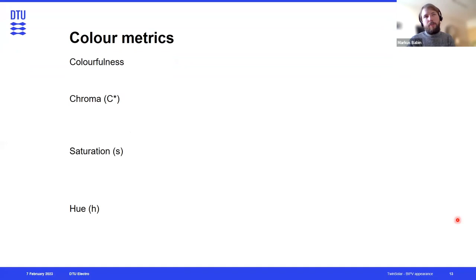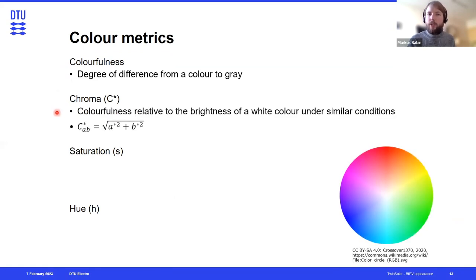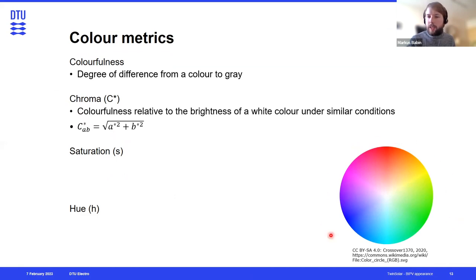Going from brightness and lightness to color descriptions: colorfulness is not very well defined — it's basically the degree of difference from a color to gray. What we use instead is chroma, which is the colorfulness referred to a white color under similar conditions, the same way we determine lightness in the CIE LAB color space. Looking at the color wheel, that could be the Euclidean distance in this color space.